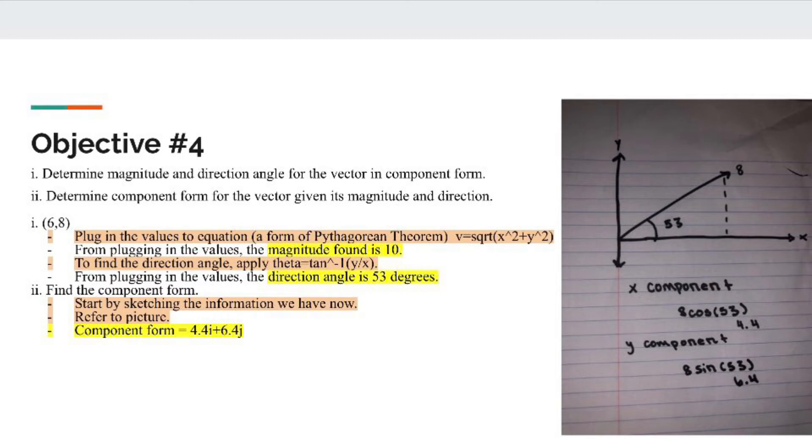I plugged these values into the equation v equals square root of x squared plus y squared, which is a form of the Pythagorean theorem in terms of vectors. From plugging these values, I got a magnitude of 10. To find the direction angle, I applied theta equals tan inverse of y over x, and got a direction angle of 53 degrees.